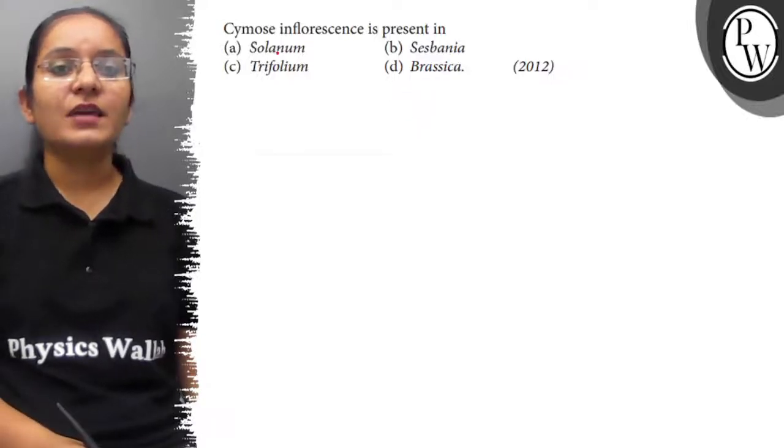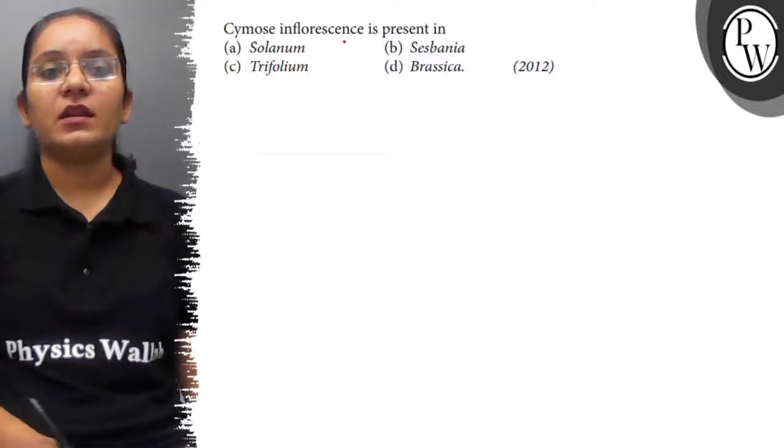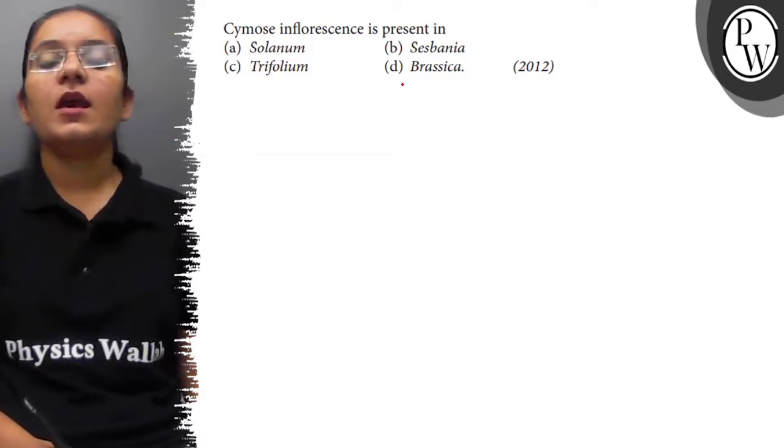Hello students, the question is, cymose inflorescence is present in A. Solanum, B. Sesbania, C. Trifolium, D. Brassica.